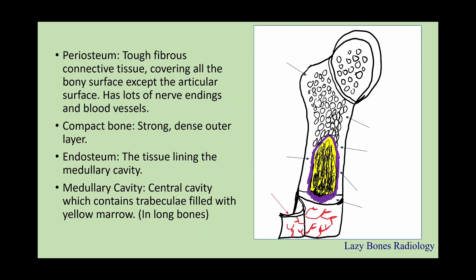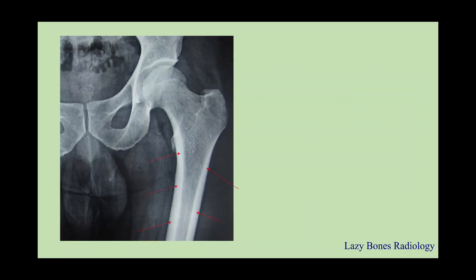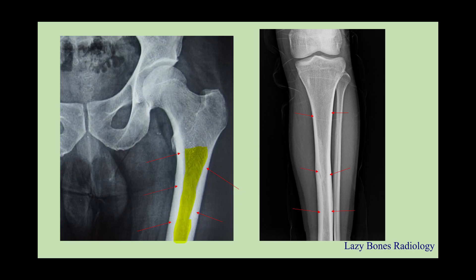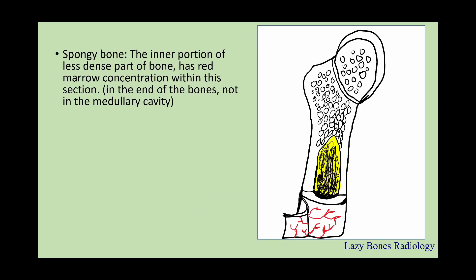Next is the medullary cavity, which is the central cavity containing trabeculae filled with yellow marrow within long bones. As you can see here, this is the compact bone, inside is the medullary cavity, and in between those two is the endosteum. Next is the spongy bone — the inner, less dense portion of the bone, which has a red marrow concentration. It is important not to confuse that the medullary cavity is filled with yellow marrow while the spongy bone at the ends of the bone is filled with red marrow. Do not get these confused.